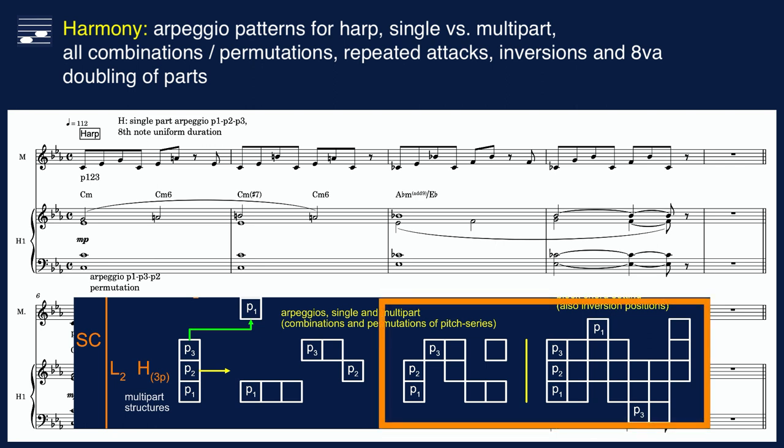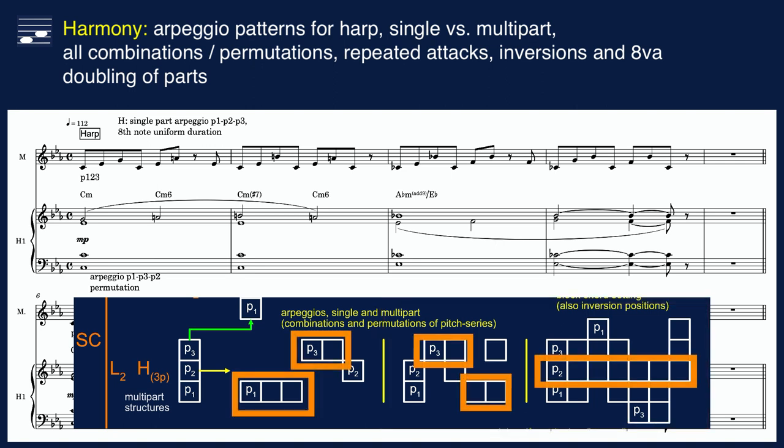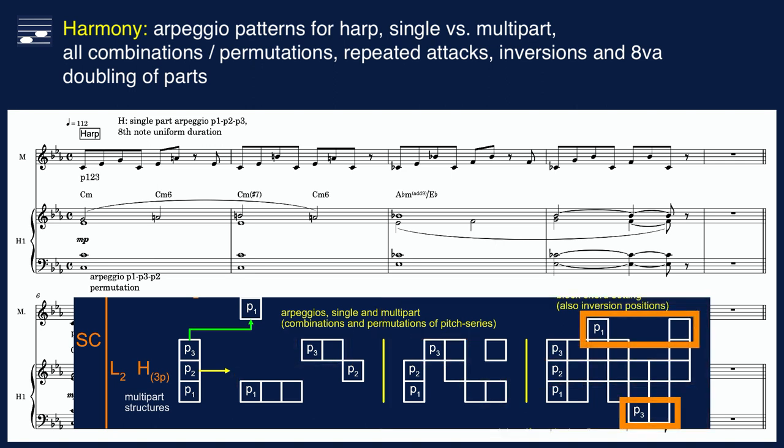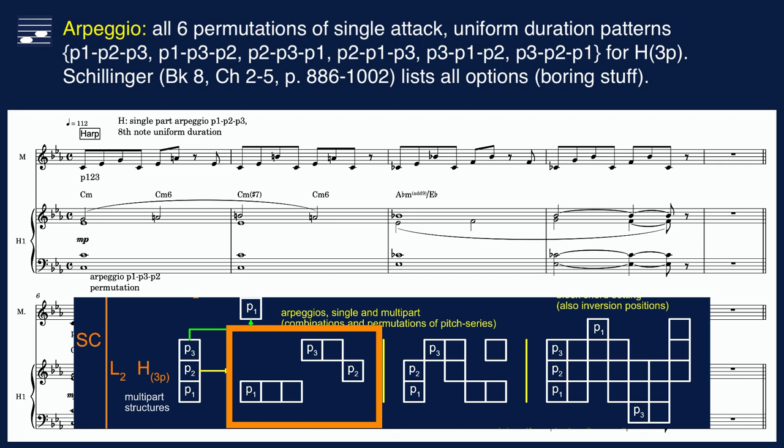Alternatively, create multipart arpeggios — here two or three simultaneous attacks. Part attacks may be repeated and we may use chord inversions. For uniform duration single part arpeggio patterns, the note attack sequence is based on part permutation. Schillinger spends two-thirds of his book listing all combination and permutation options for one to four part harmony layers, which does not make particularly interesting reading.